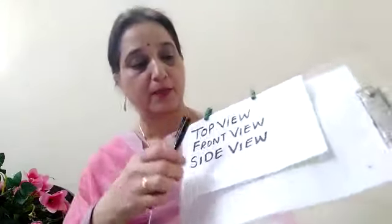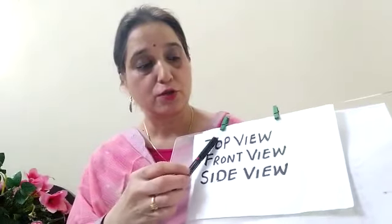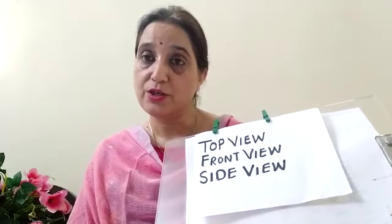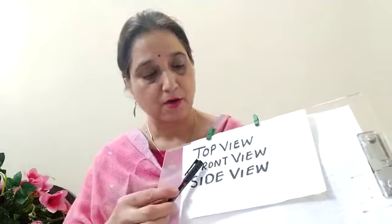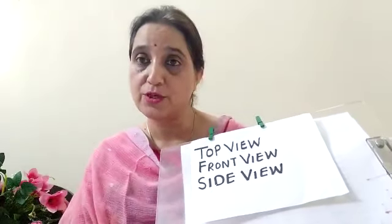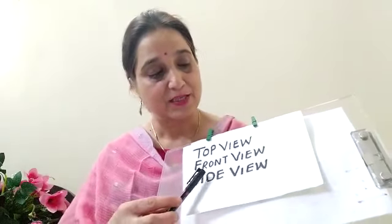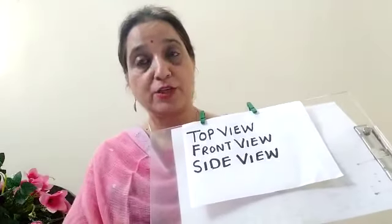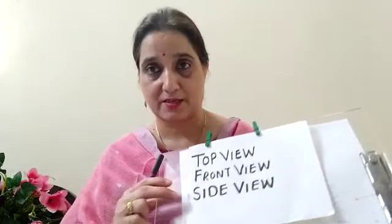So solid shapes can be viewed as: top view — how an object looks from the top; front view — how an object looks from the front; and side view — how an object looks from the side.